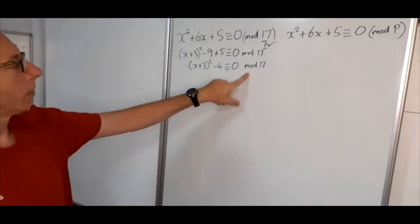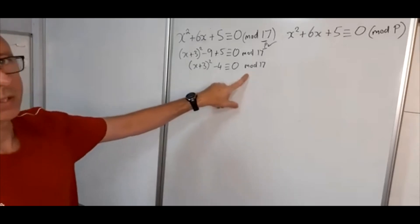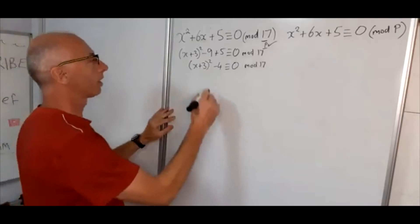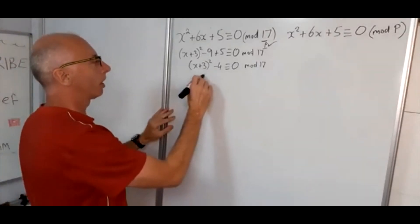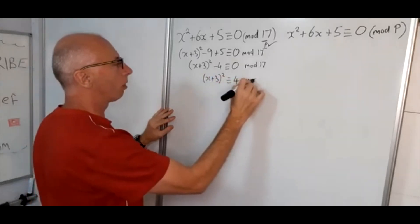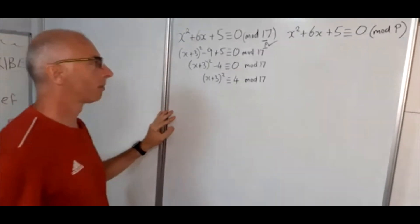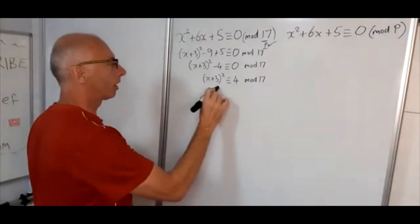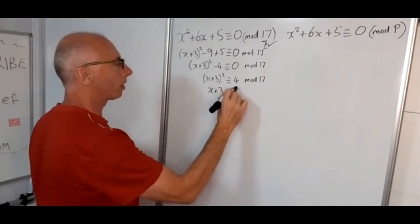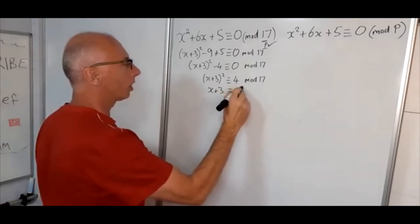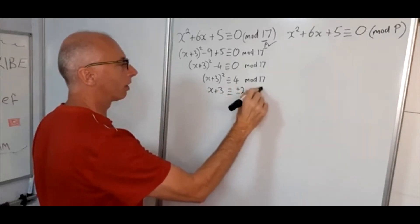Okay, now what we need to do is to bring this minus 4 onto the other side and take the square root on both sides. So now we've got x plus 3 squared is congruent with 4 mod 17. Okay, square root both sides. As we said x plus 3 is congruent with plus or minus 2 mod 17.